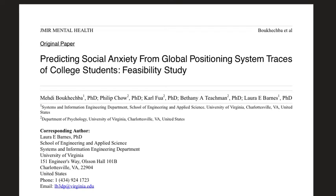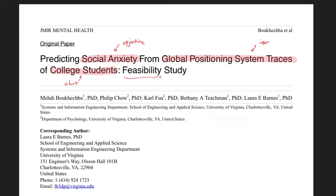The first paper we are reviewing is called 'Predicting Social Anxiety from Global Positioning System Traces of College Students: Feasibility Study.' It was published in JMIR Mental Health and came from the University of Virginia, with Dr. Barnes as the corresponding author. Breaking down the title, the main input is GPS traces, used to predict social anxiety in a college student cohort.